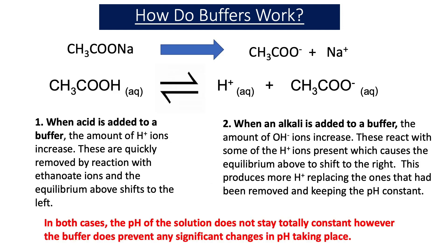Sodium ethanoate splits up into ethanoate ions (CH₃COO⁻) and Na⁺ ions. Ethanoic acid partially splits up into H⁺ ions and ethanoate ions, but because it's a weak acid the equilibrium lies to the left, giving only a low concentration of ethanoate ions from the acid alone. That's why having sodium ethanoate is vital — it provides a high concentration of CH₃COO⁻ ions, which are essential to how the buffer system works.